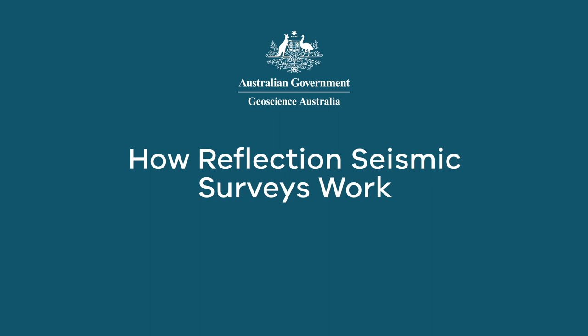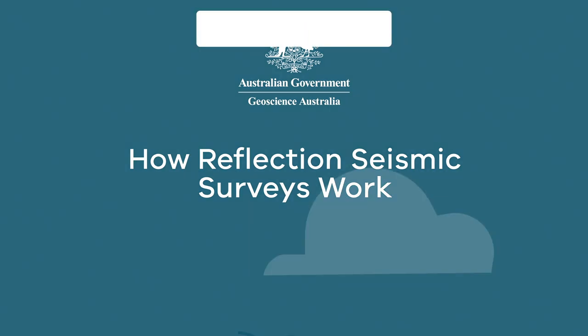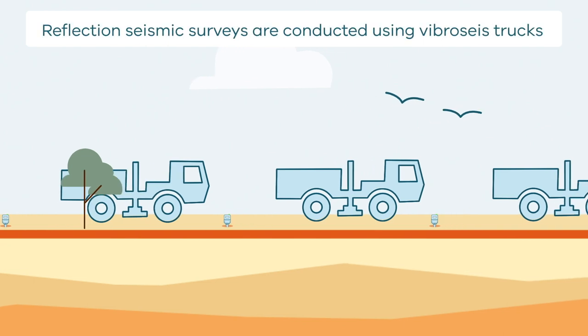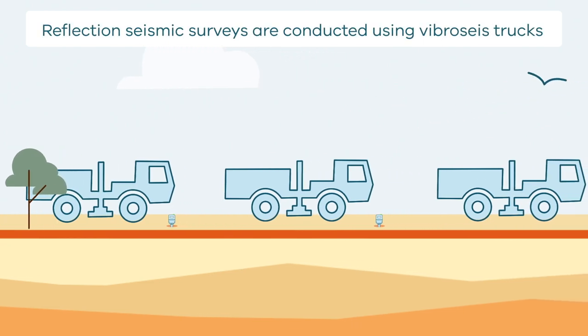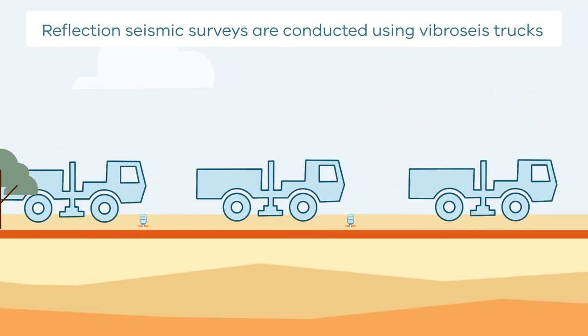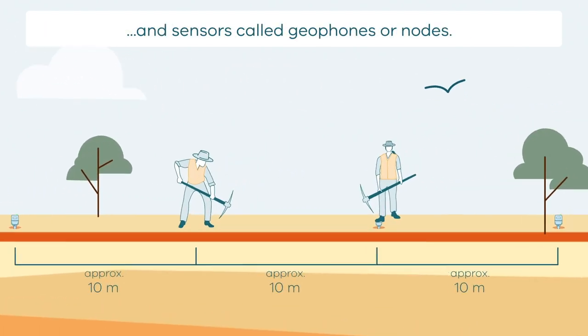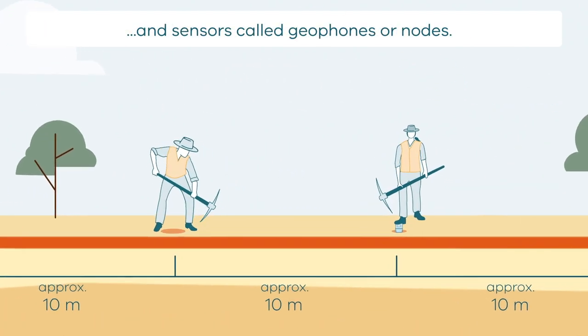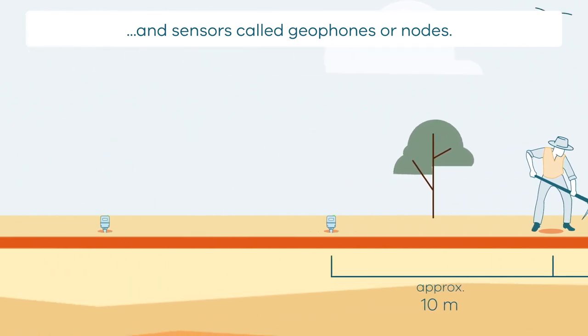Reflection seismic surveys listen to the ground moving. Seismic reflections use vibroseis trucks to listen to the ground moving and sensors that they call geophones or nodes.